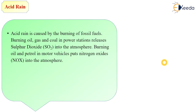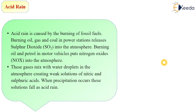Acid rain is caused by burning of fossil fuels. Burning oil, gas, and coal in power stations releases sulfur dioxide into the atmosphere. Burning oil and petrol in motor vehicles puts nitrogen oxides into the atmosphere. These gases, when mixed with water droplets in the atmosphere, create weak solutions of nitric acid and sulfuric acid, which fall as acid rain when precipitation occurs.